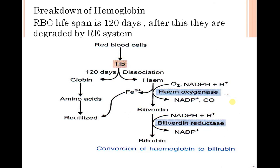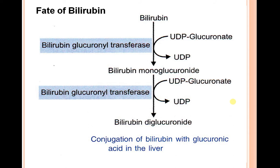Bilirubin is an excretory product found in urine. Globin is re-utilized because it is a protein that is converted back to amino acids. Bilirubin forms bilirubin monoglucuronide and bilirubin diglucuronide by involving UDP-glucuronide and the enzyme bilirubin glucuronyl transferase.